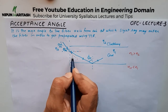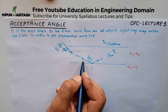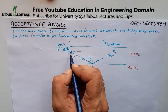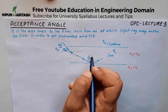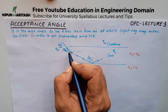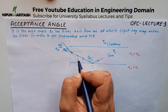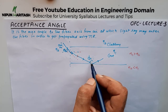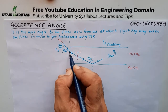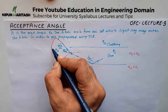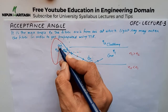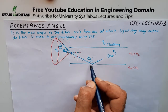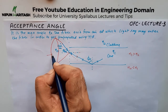Since we go from rarer to denser medium, the ray moves towards the normal. This is actually beneficial for us. At the boundary of air and core, we send the light in such a way that we want to facilitate it to be greater than the critical angle, and that can only happen if we send the light within a certain range — beyond this range it will be less than the critical angle. This range defines the acceptance cone.